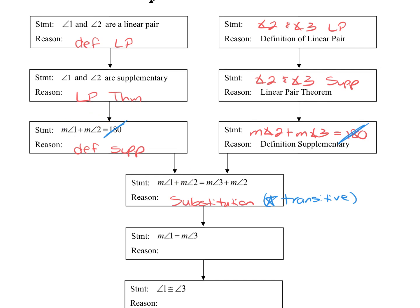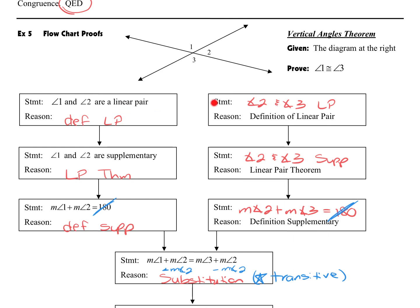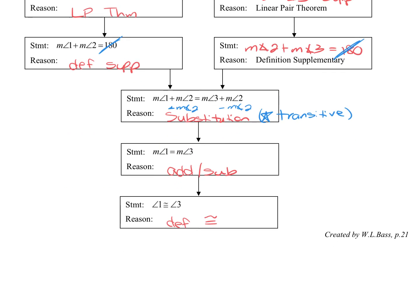Now we've got the measure of angle 1 plus angle 2 equal to the sum of angles 2 and 3, and we can continue the proof. We notice we've got measure of angle 2 on each side, so we subtract measure of angle 2 from each side — that's the addition/subtraction property — leaving us with measure of angle 1 equals measure of angle 3. If their measures are equal, they're congruent by the definition of congruence. In this proof, we started with linear pairs and that allowed us to show that vertical angles 1 and 3 are in fact congruent to each other as we wanted. We'll take a second note — see you next time.